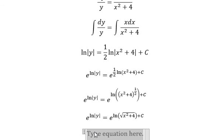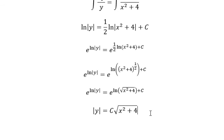And this gives the absolute value of y equals e to the power of this. E to the power of C we change to C. We know that C can be positive or negative, so we can write the new one.